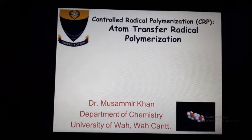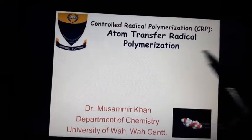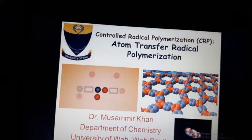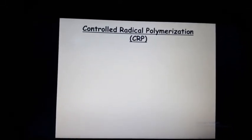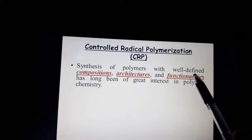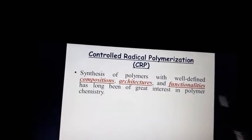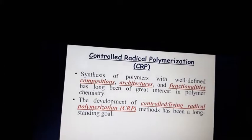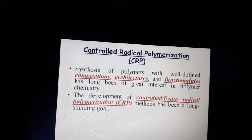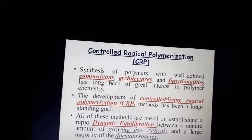Today I am going to explain controlled radical polymerization or atom transfer radical polymerization. These are types of living radical polymerization which can be used to synthesize polymers. Controlled radical polymerization is very important because the synthesis of polymers with well-defined composition, architectures, and functionality are the goal of polymer chemistry, and this can be achieved with the development of controlled or living radical polymerization techniques.